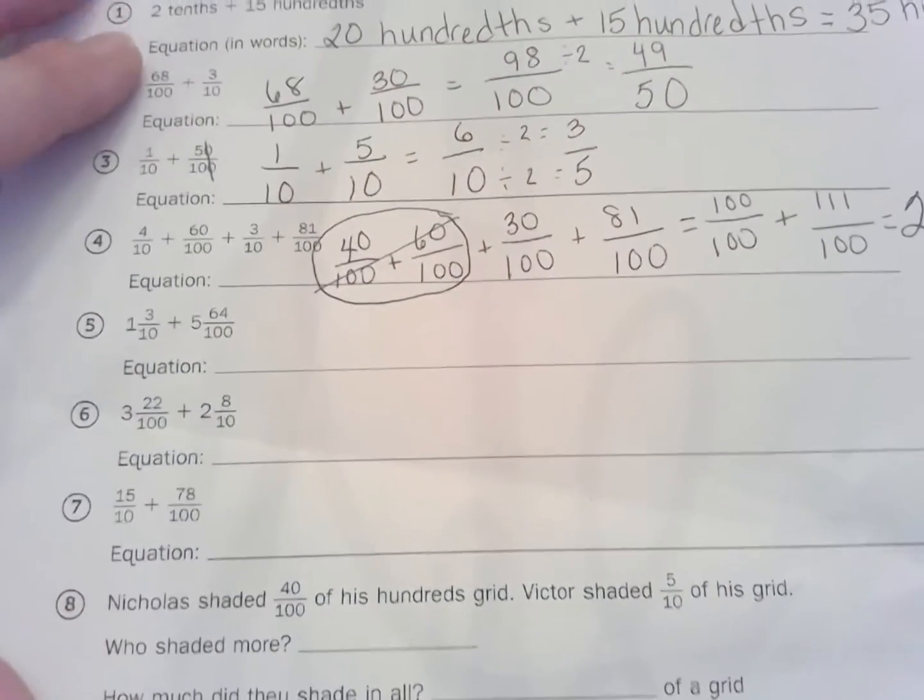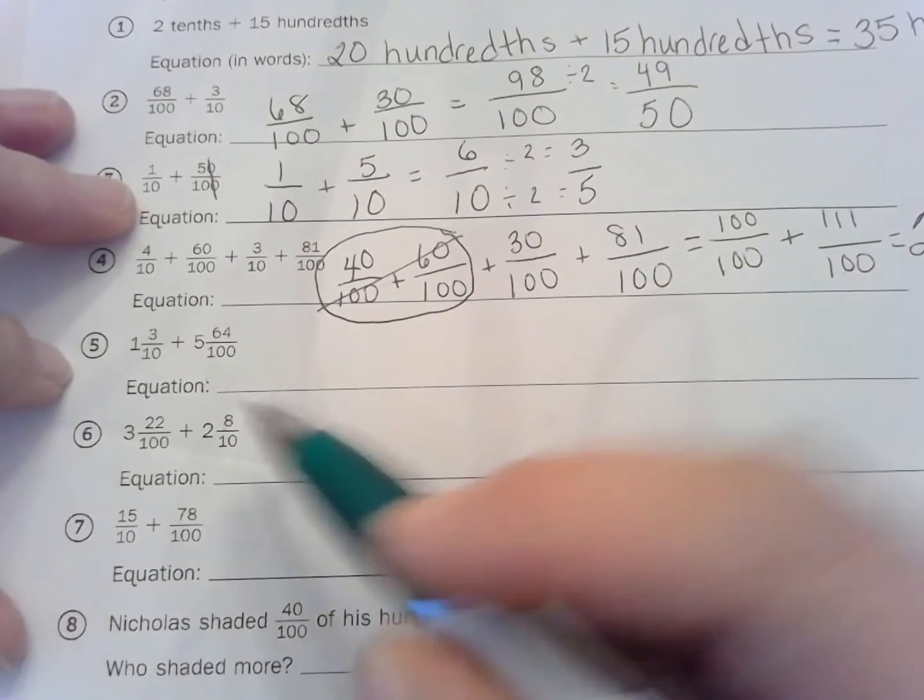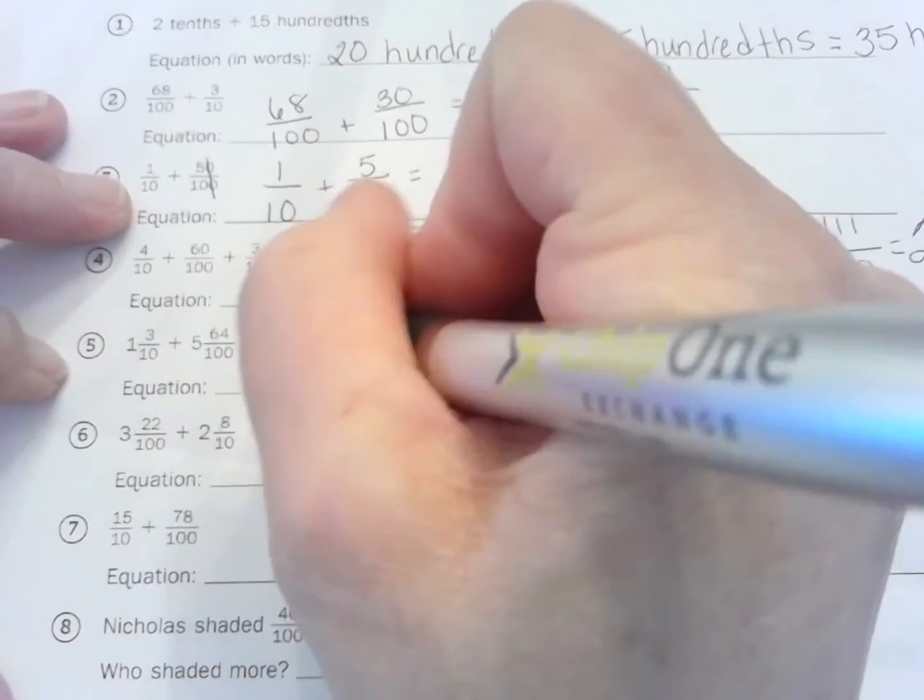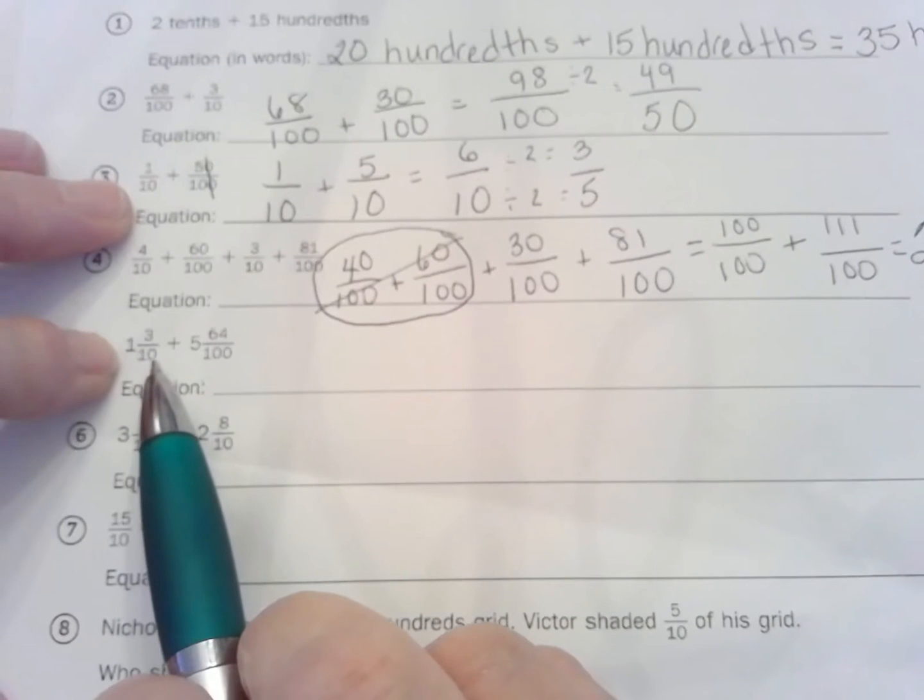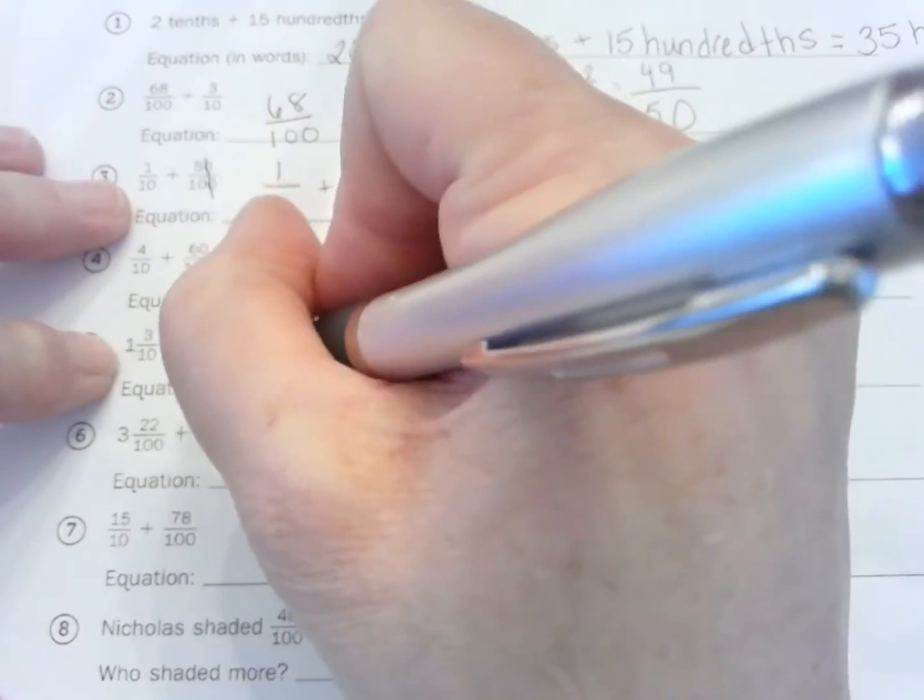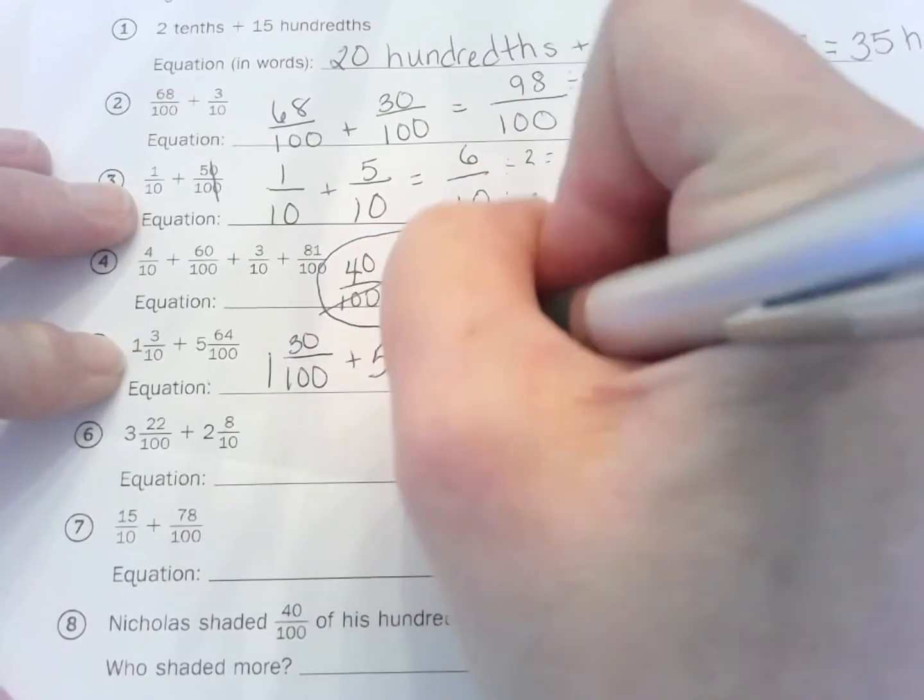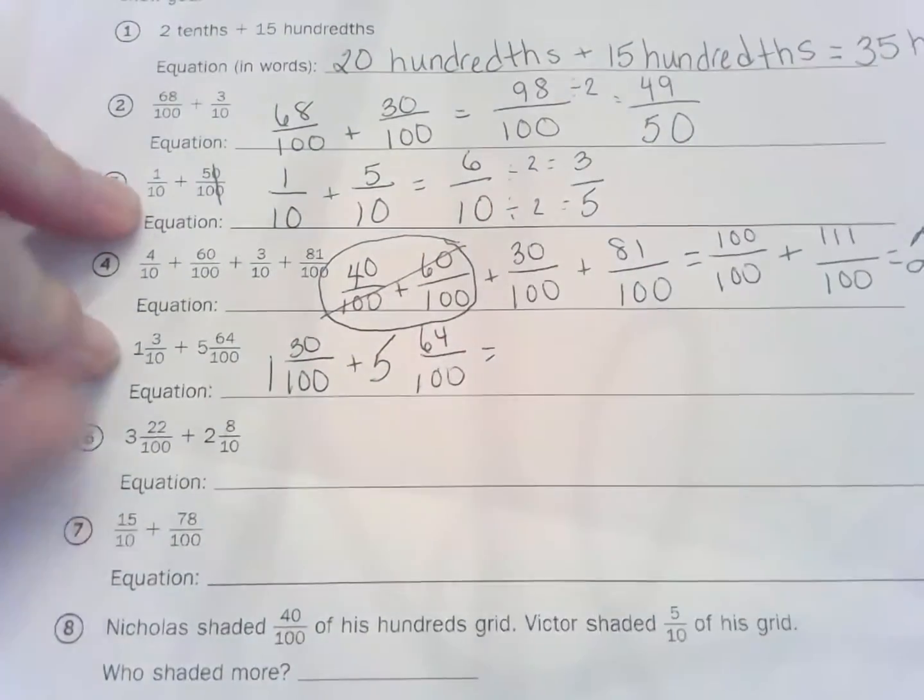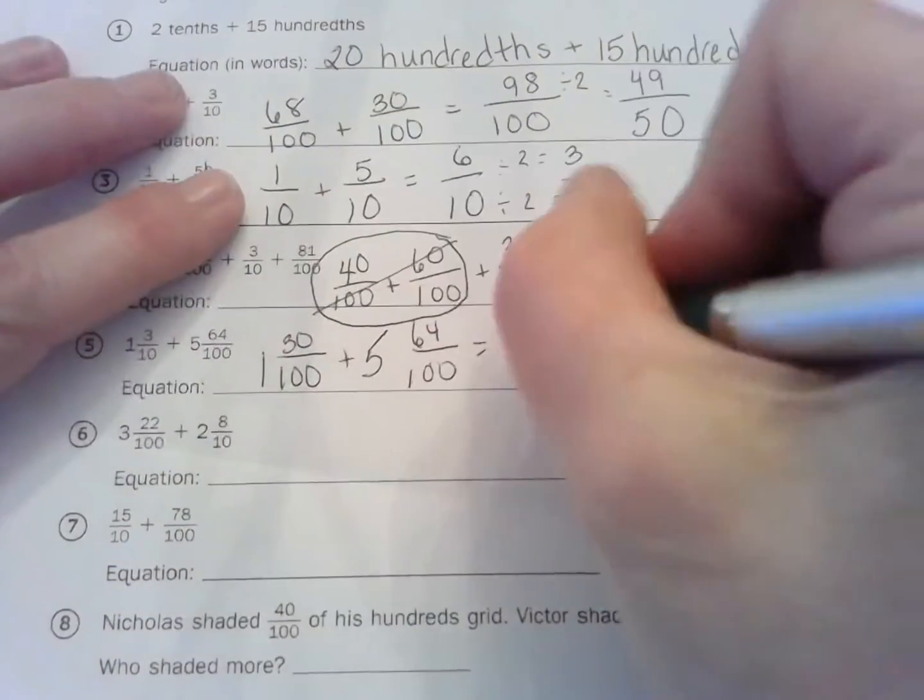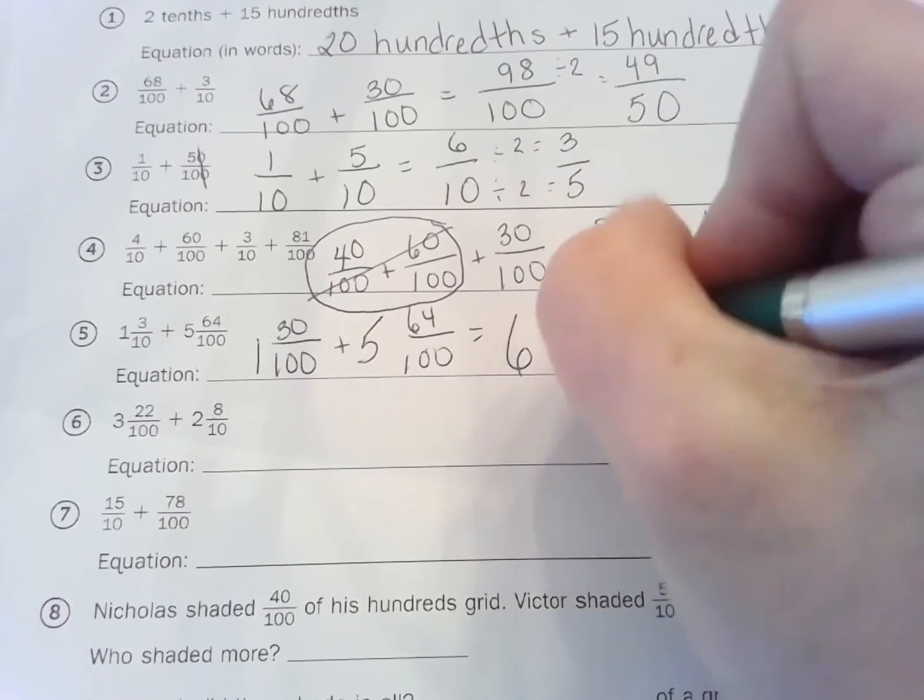So now let's go to the next one. 1 and 3 tenths plus 5 and 64 hundredths. Wait, look what I forgot to do. 64 hundredths and 3 tenths, so this is going to be 1 and 30 hundredths plus 5 and 64 hundredths. Well, so 5 plus 1 is 6, and then 64 plus 30, that is 94 hundredths.